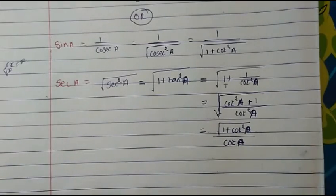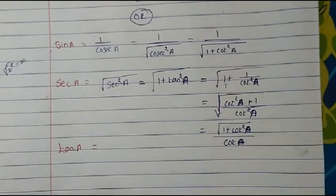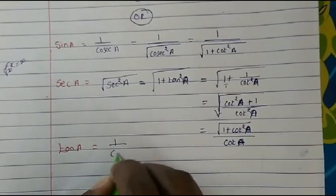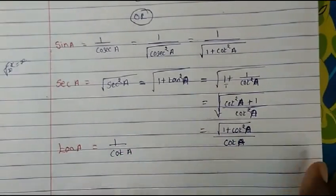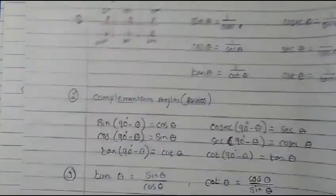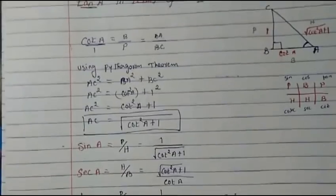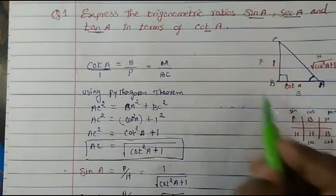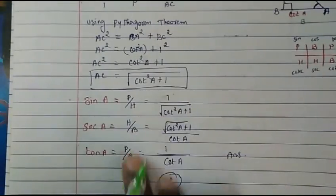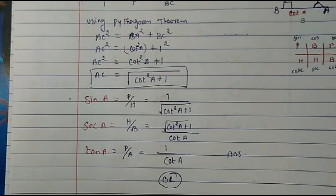For the third part, tan A: tan is simply 1 upon cot, so tan A equals 1 over cot A. That's it. To use this second method, you should know all the identities by heart. If you don't know the identities, it's better to go with the first method — complete the three sides of the triangle, then put in the ratios and write the values. I hope it is clear to you. Thank you and God bless you.